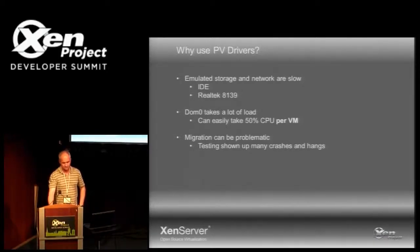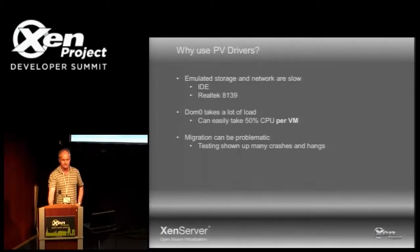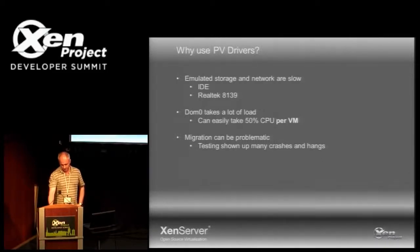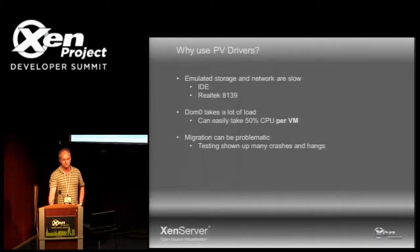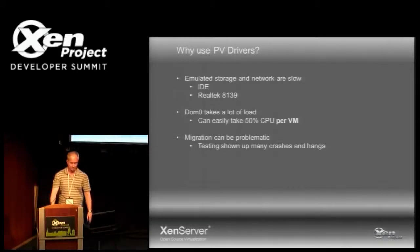Migration is also problematic. Theoretically it should work, but in testing we've done in XenServer it's pretty flaky and falls over quite a lot. We don't have source code for the device drivers in Windows, so we can't debug it very easily. PV avoids these limitations by massively reducing the number of VM exits, removing IO emulation and MMIO page faulting, removing limits on the number of disks and network devices, and allowing the VM to suspend and migrate cooperatively — making it less prone to failure.